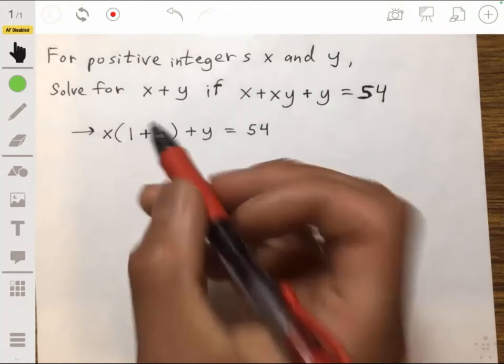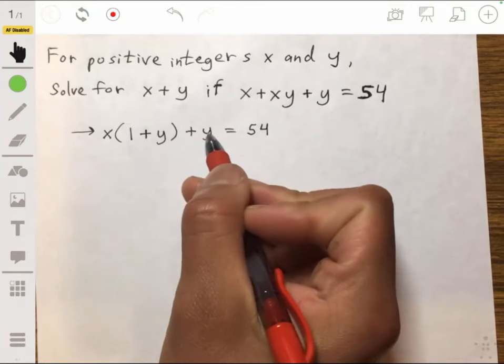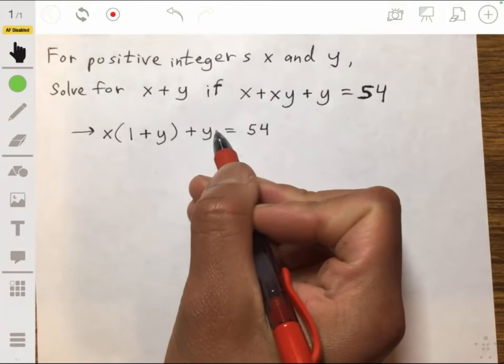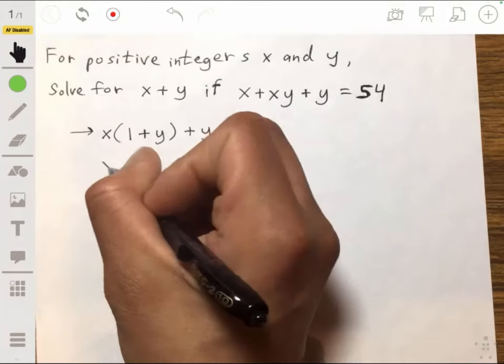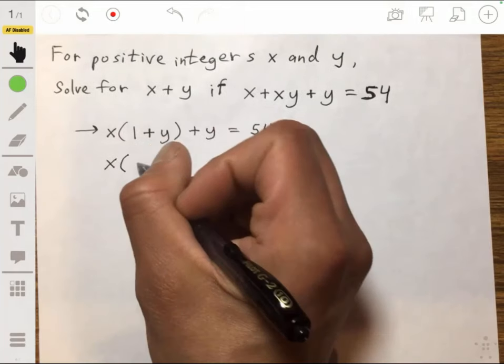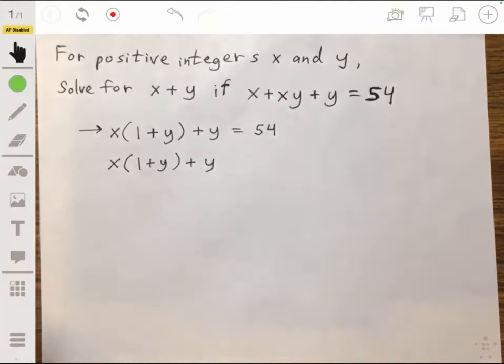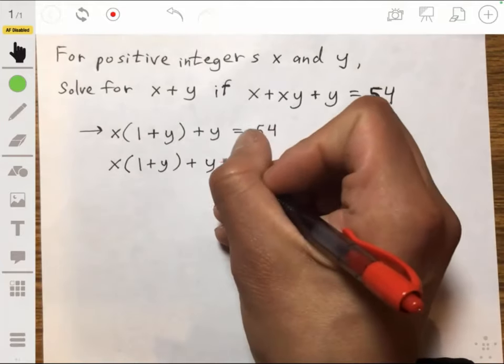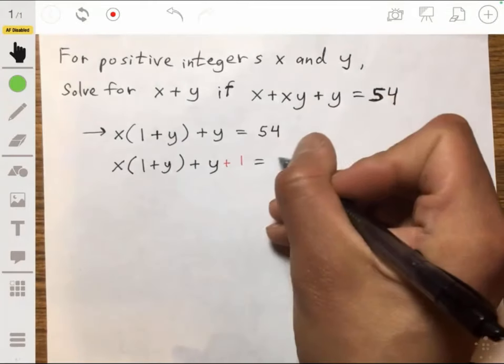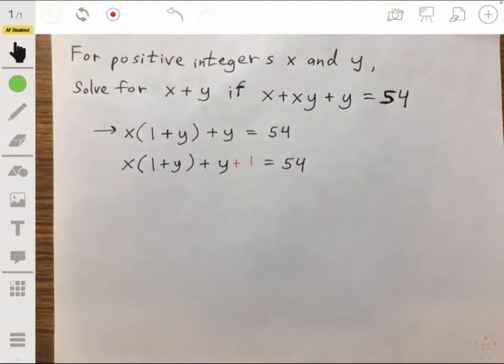And then here we have a 1 plus y, so what we can do is then add one to each side of the equation, so we would get x times 1 plus y plus y plus 1 equals 54 plus 1.